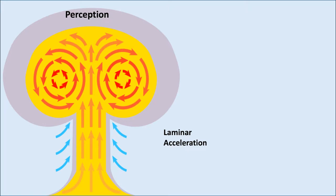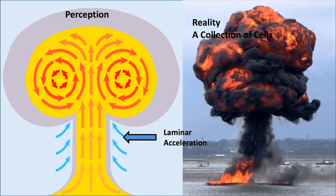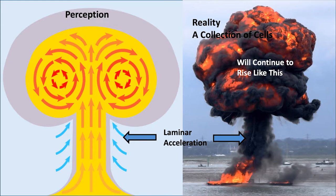The perception is laminar acceleration here. The reality is they very quickly form a collection of cells. So here we have the laminar acceleration at the bottom, and we can see the five independent individual cells that are actually climbing up from this fire. It will continue to climb like this with the cell flows being sympathetic to each other, not interfering with each other.